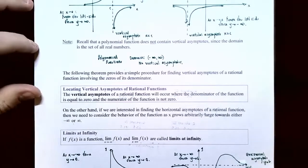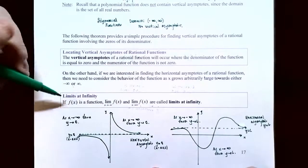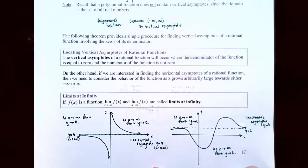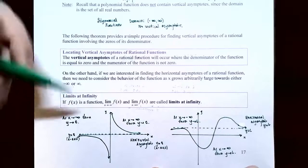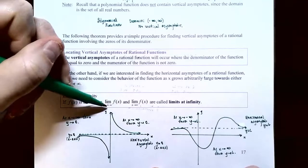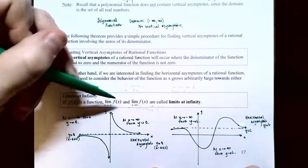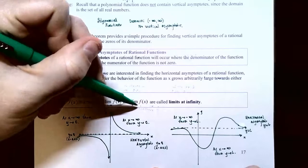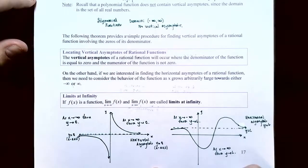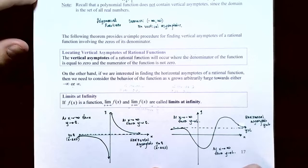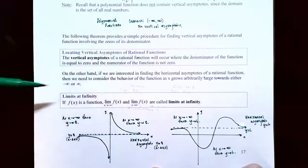Now let's shift our attention to limits at infinity. Limits at infinity describe what happens when x is growing arbitrarily large towards infinity or negative infinity — what happens at the far right end and the far left end of the graph. These are called limits at infinity.